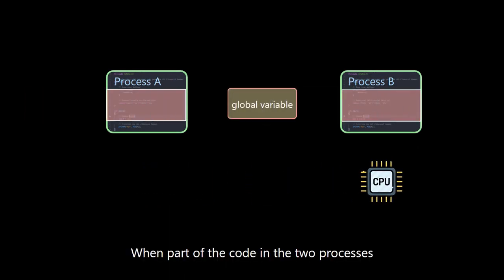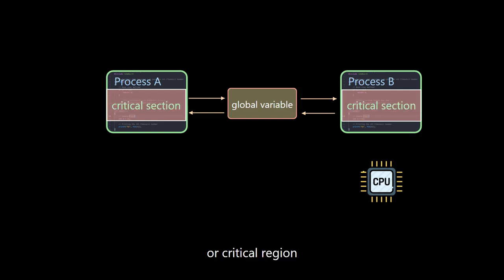When part of the code in the two processes creates and writes this global variable at the same time, there will be problems due to the competition. We call this part of the code the critical section or critical region.